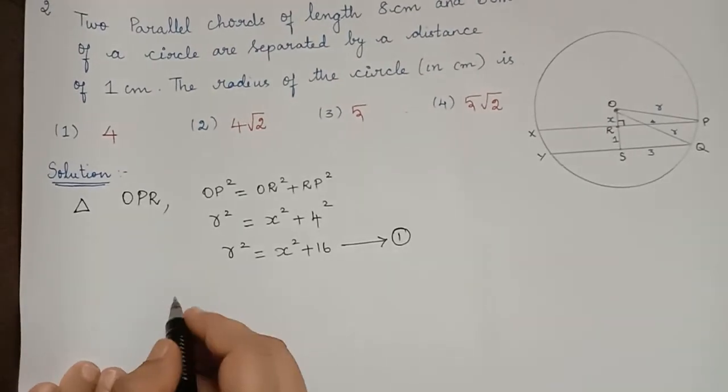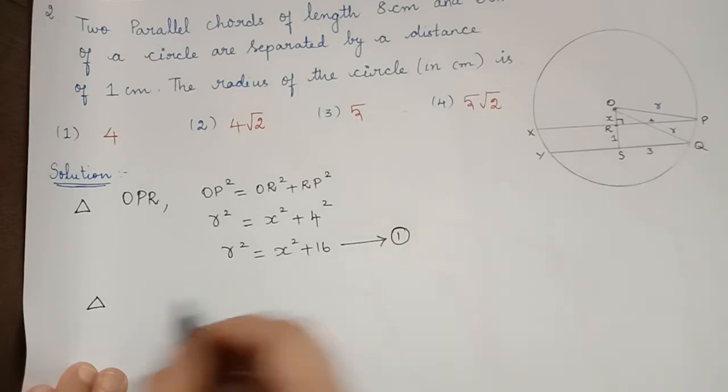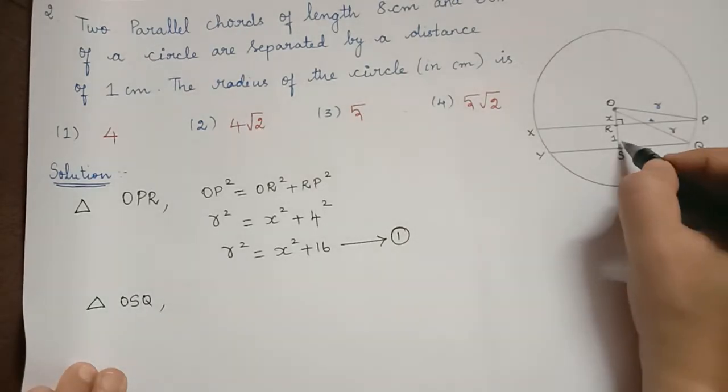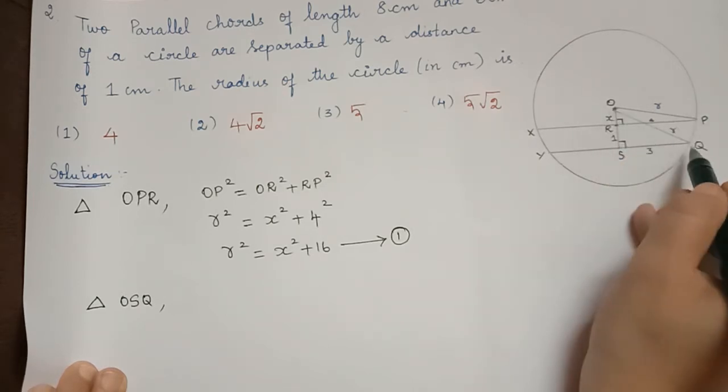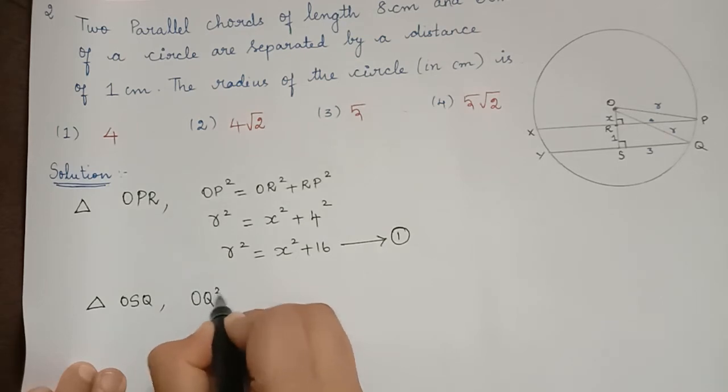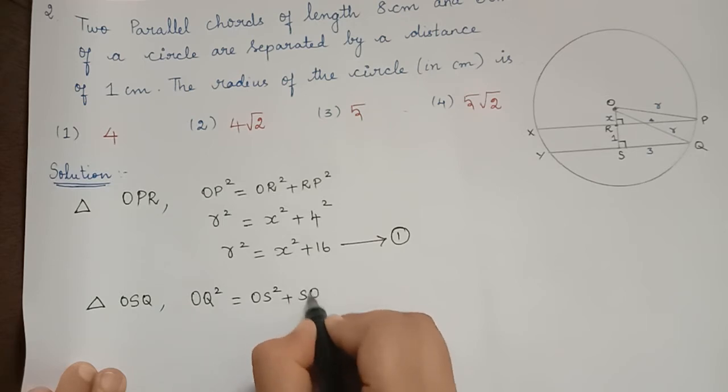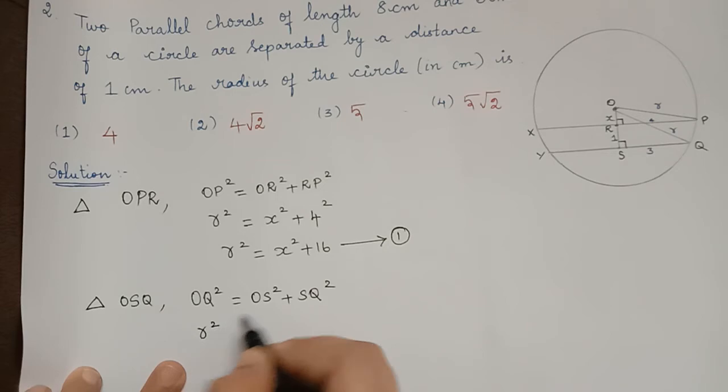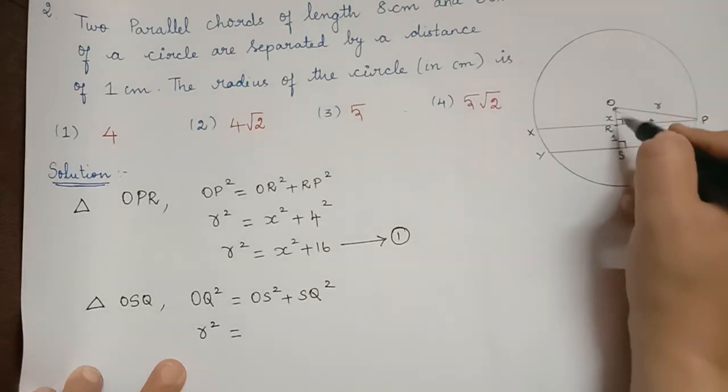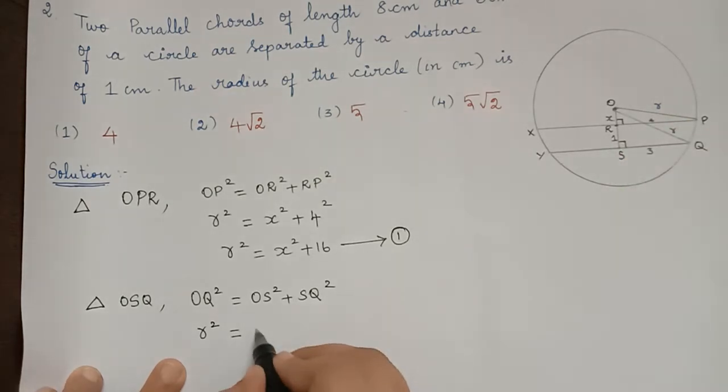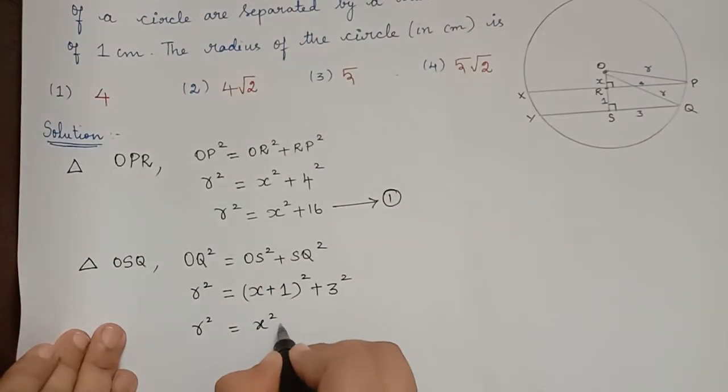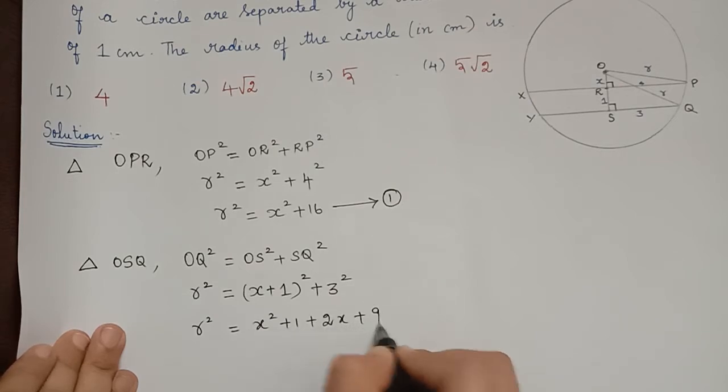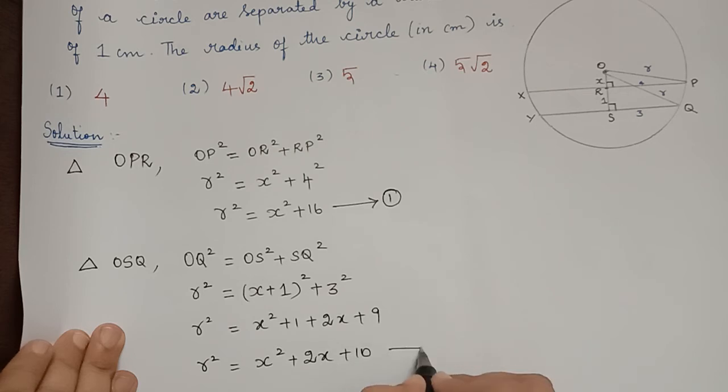Now, after this, we shall consider the triangle OSQ. In this triangle, angle S is the right angle and OQ is the hypotenuse. So, OQ square will be equal to OS square plus SQ square. Now, OQ square is R square is equal to OS is OR plus RS that is X plus 1, so X plus 1, the whole square plus SQ is 3, so 3 square. So, R square is equal to X square plus 1 plus 2X plus 9. So, R square is equal to X square plus 2X plus 10. Let us mark this as equation 2.